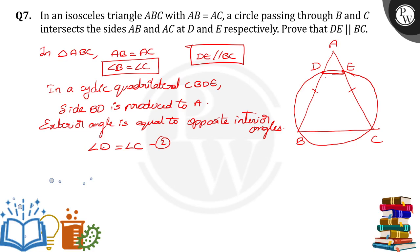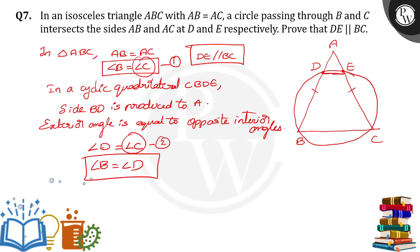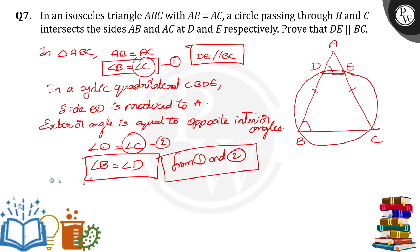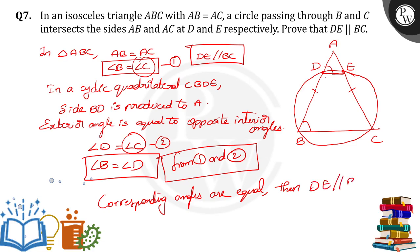So that gives us angle D is equal to angle C. And from the first result, angle B is equal to angle C. From equations 1 and 2, we can say angle B is equal to angle D, because both are equal to angle C. When angle B is equal to angle D, they are corresponding angles. When two corresponding angles are equal, then DE is parallel to BC.